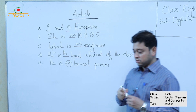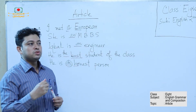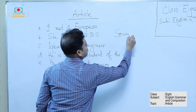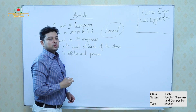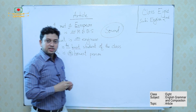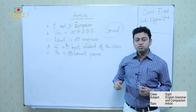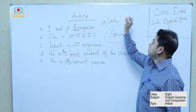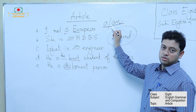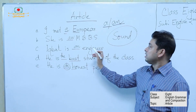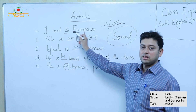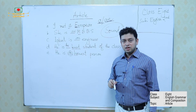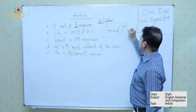The most important thing: if you want to decide whether to use A or AN, it basically depends on sound. For using A or AN, sound is very important. AN is for vowel sound, A is for consonant sound. No matter what the letter is, what matters is the sound. A and AN are indefinite articles. THE is the definite article.